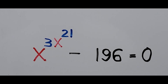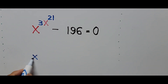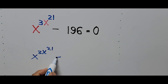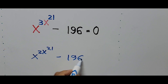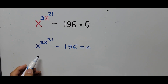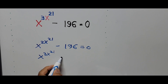Now, let's start solving. This is x raised to 3x raised to the 21 power minus 196 equals 0. From here I would like to transpose the constant to the right side of the equation. That is now x raised to 3x raised to 21 power equals 196.